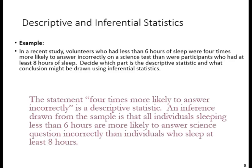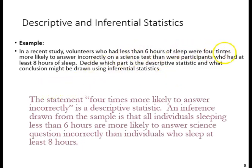In this example, we can see statements that refer to both descriptive and inferential statistics. In a recent study, volunteers who had less than six hours of sleep were four times more likely to answer incorrectly on a science test than were participants who had at least eight hours of sleep. The descriptive part involves describing sleep patterns and performance on the science test — the statement 'four times more likely to answer incorrectly' is a description. If we're trying to make a leap from the participants in a study to a wider population, that's where we come into an inference.